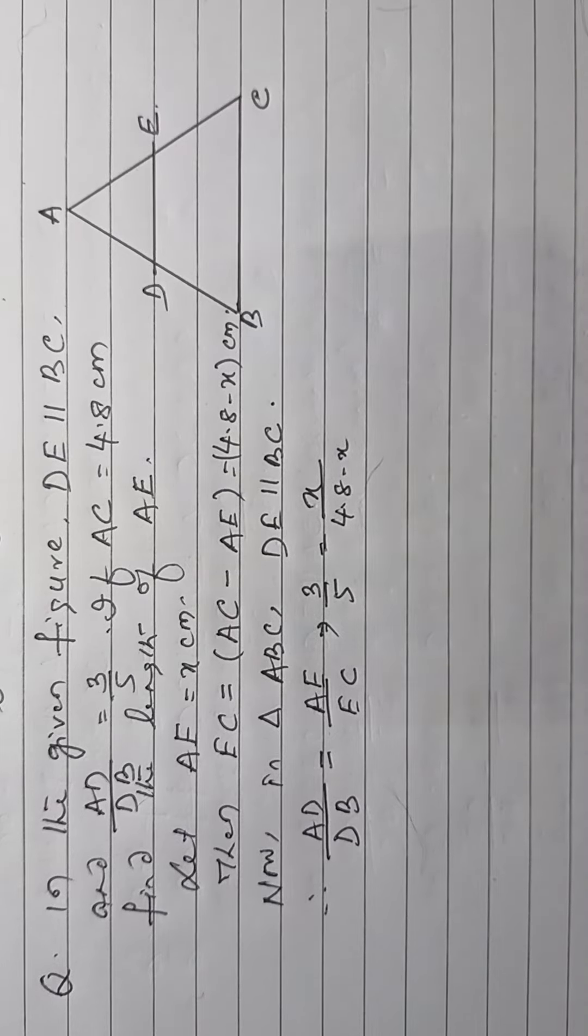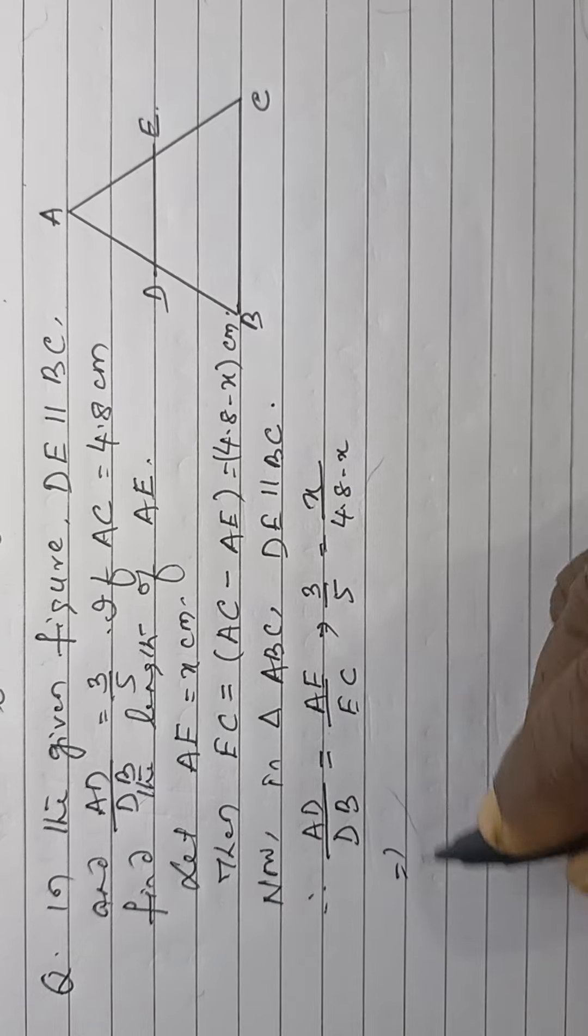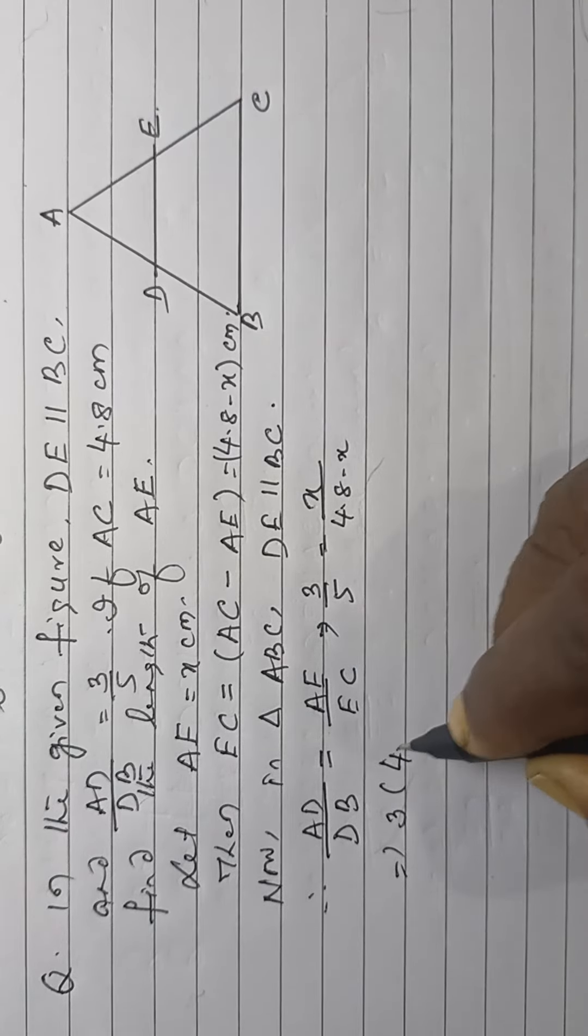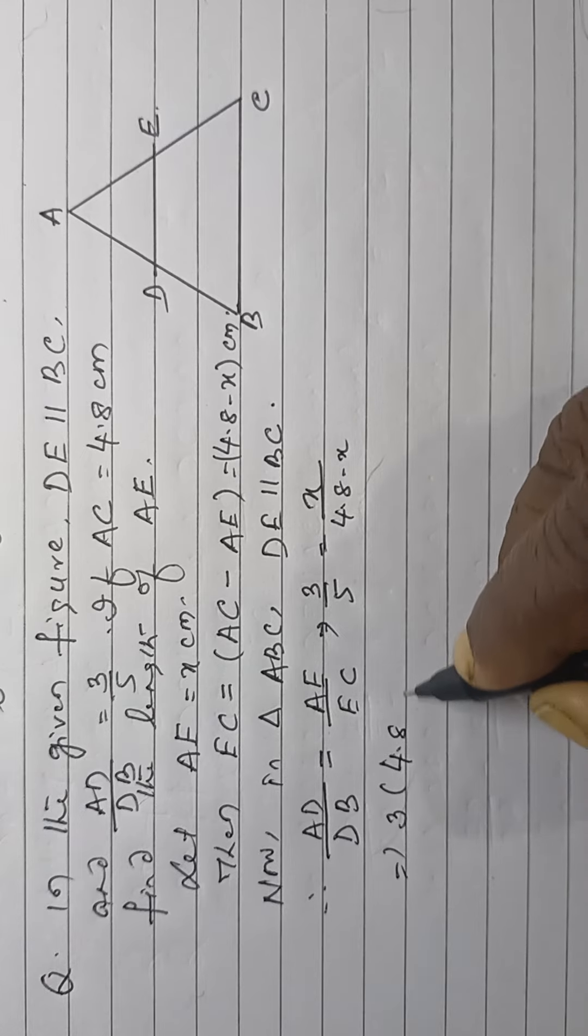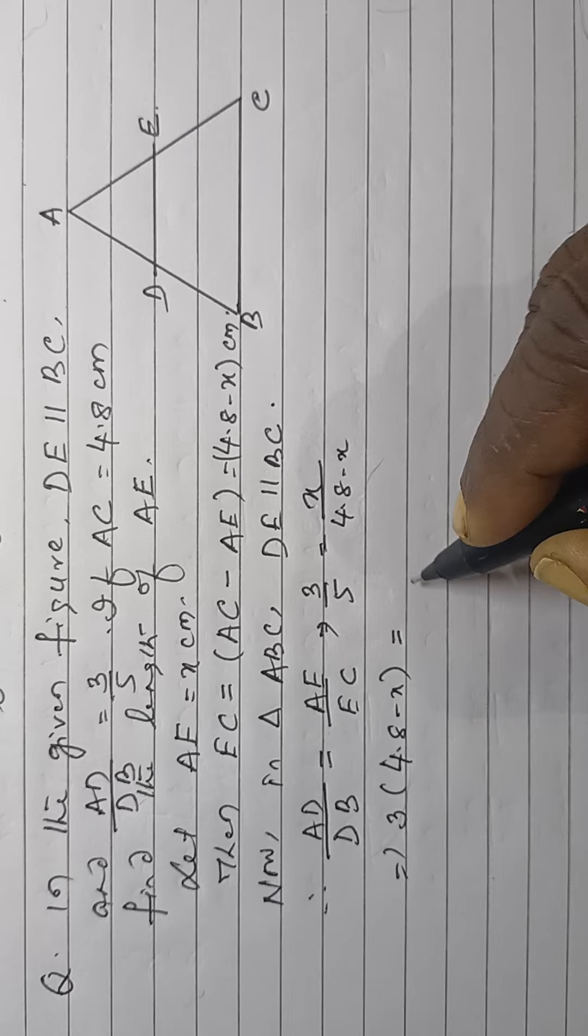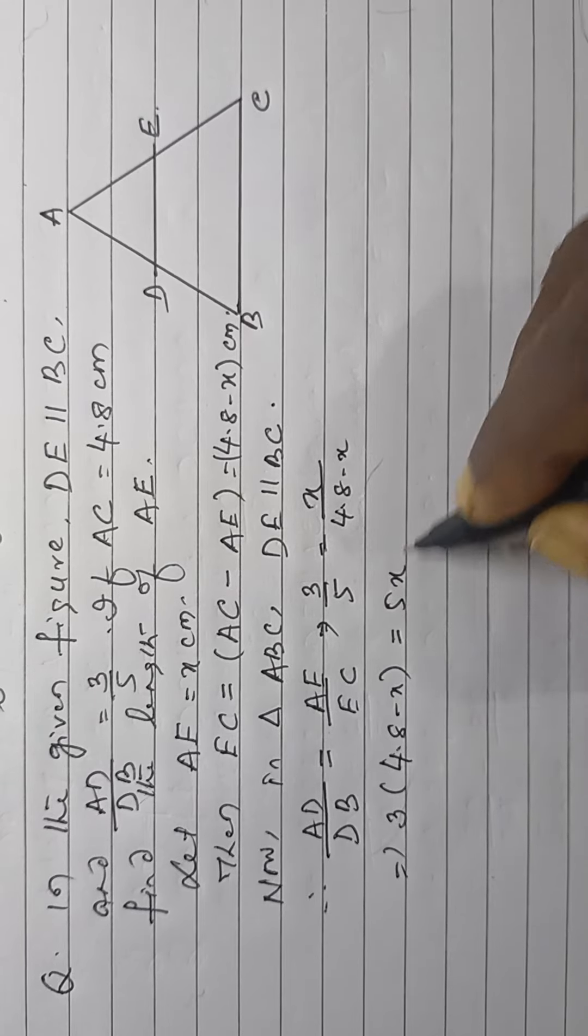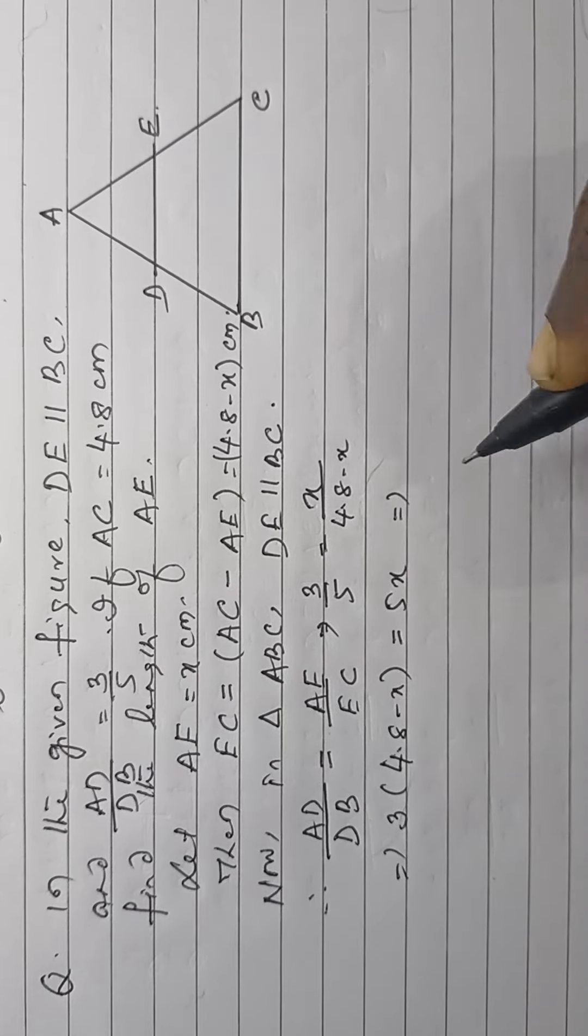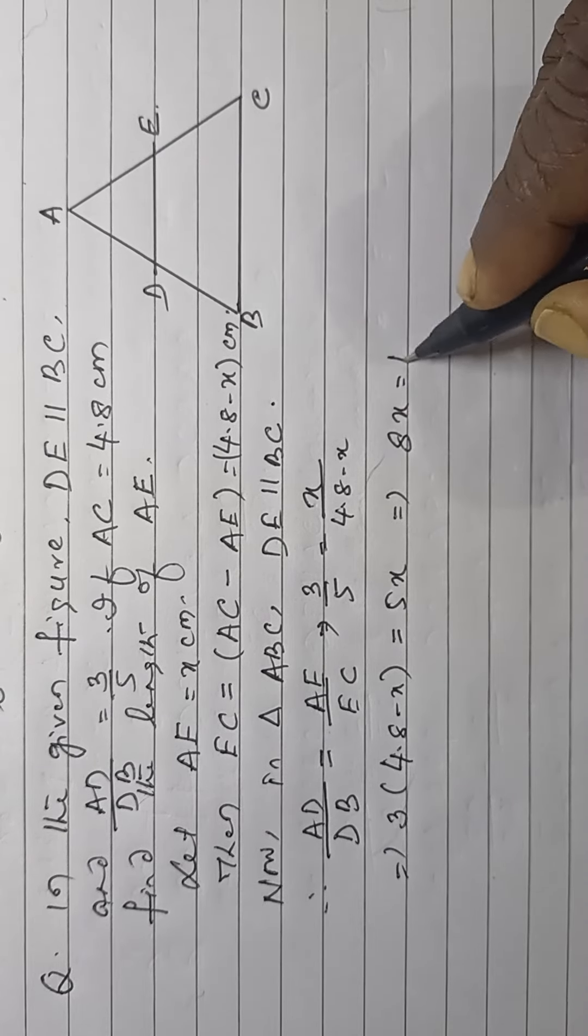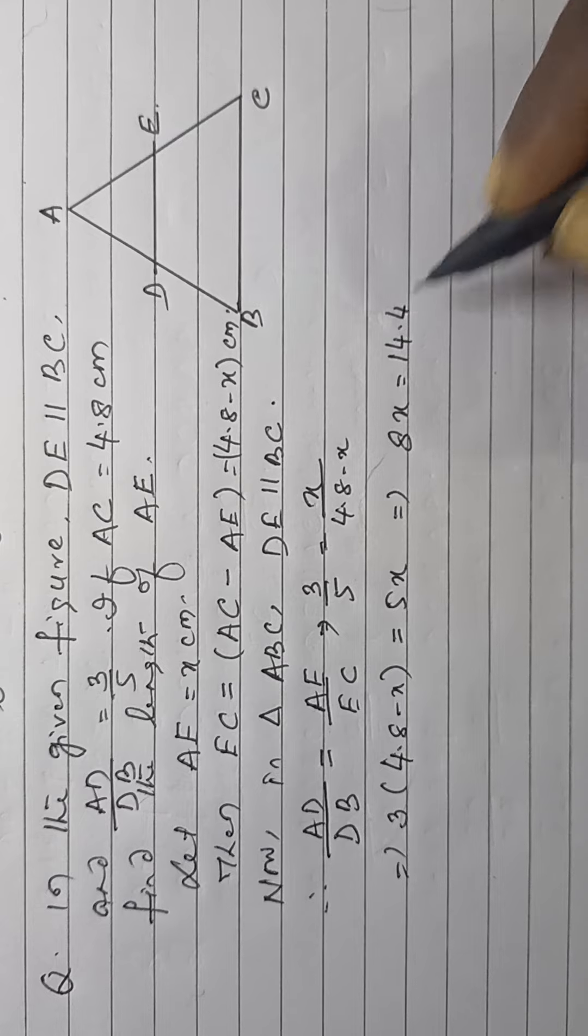Keeping the values here. Then, this is 3 into 4.8 minus X is equal to 5X by cross multiplication. Then, this is 8X is equal to 14.4.